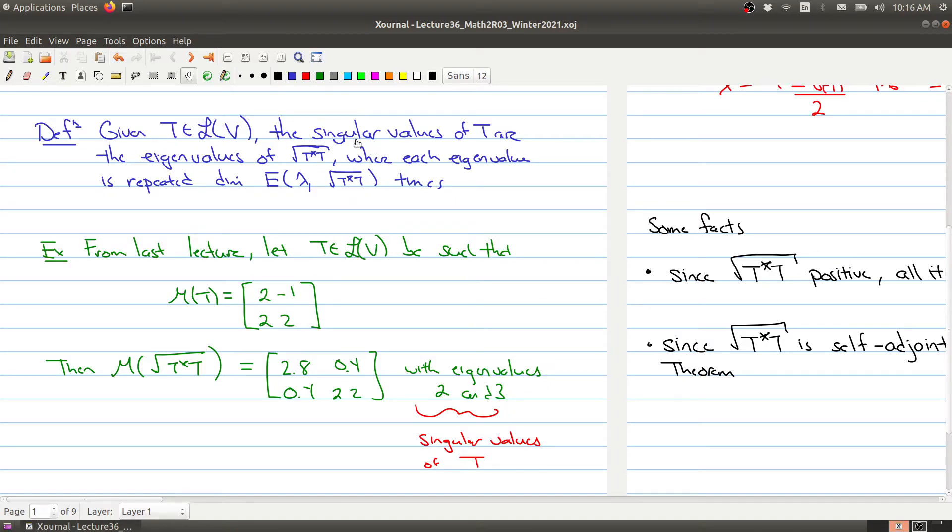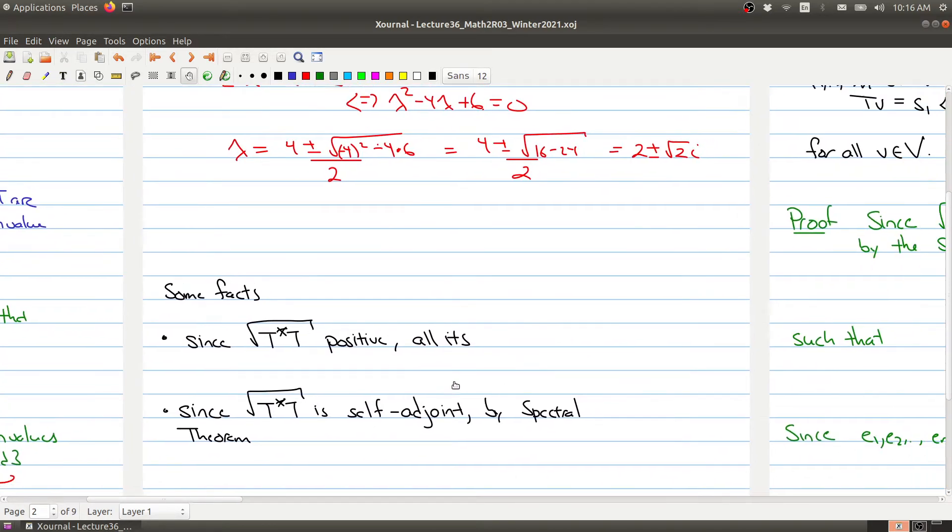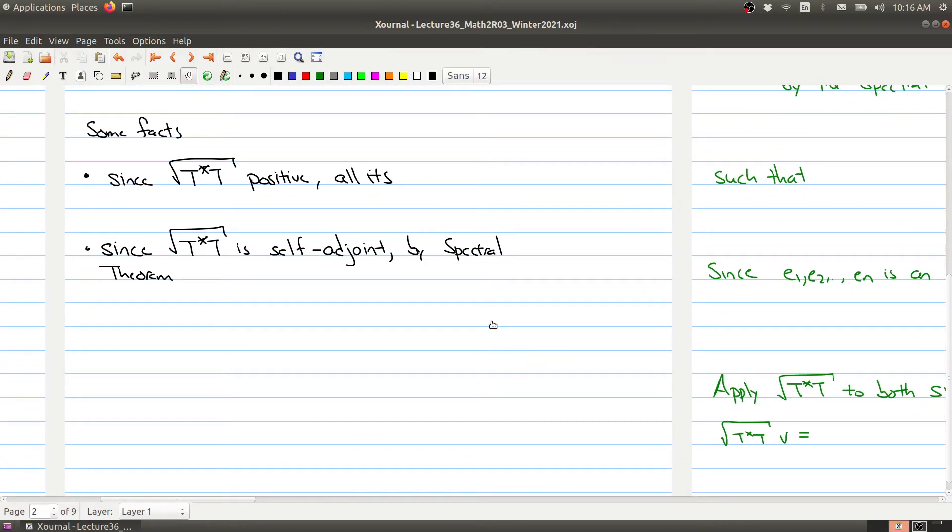In fact, the singular values, because they're coming from this matrix right here, which is positive, they all have to be real numbers. So since this is a positive operator, all its eigenvalues are non-negative because zero is allowed.